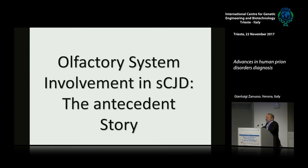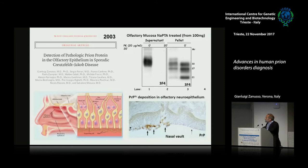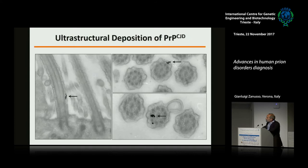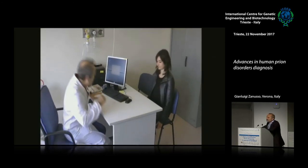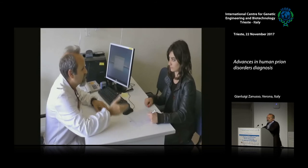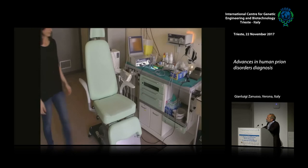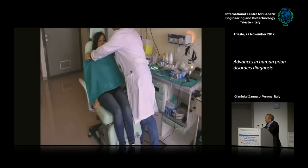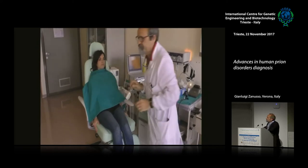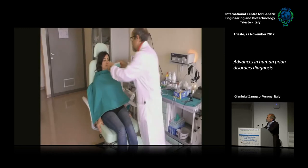We were interested in the olfactory system. We published a paper in 2003 showing the presence of PRP-SC in the olfactory neurons in cadavers. This is the immuno-electron microscopy of the cilia of the neurons of the cilioepithelium — you see the gold particles deposited at the level of cilia. We decided to do a kind of brushing of this tissue in patients with CJD.